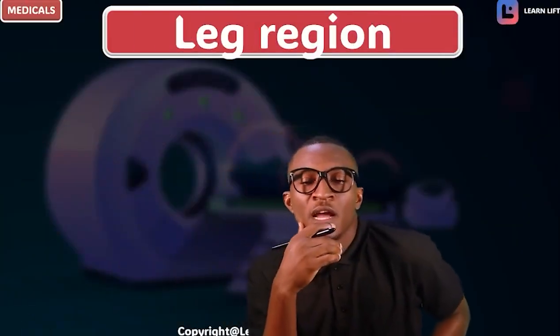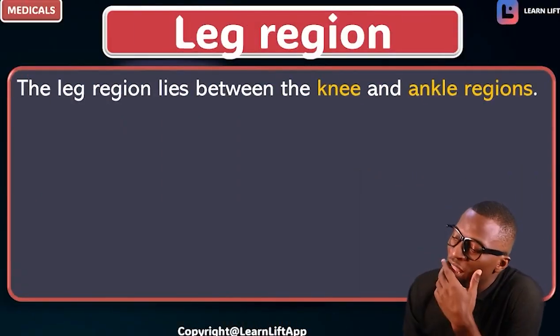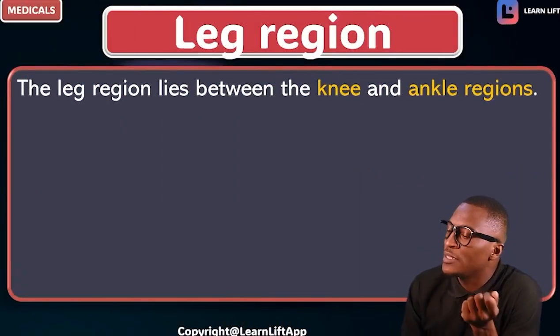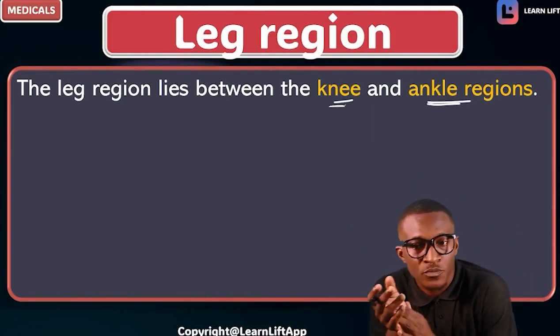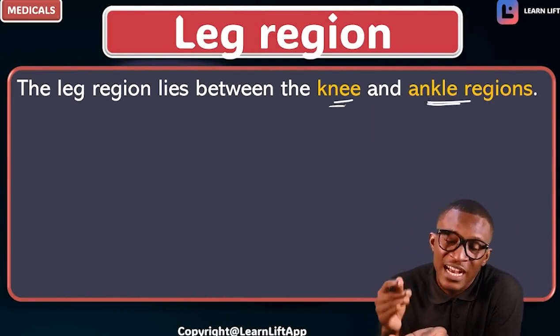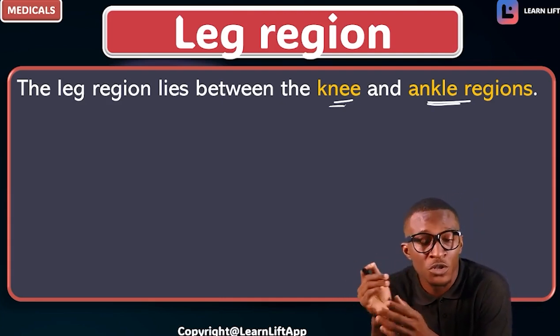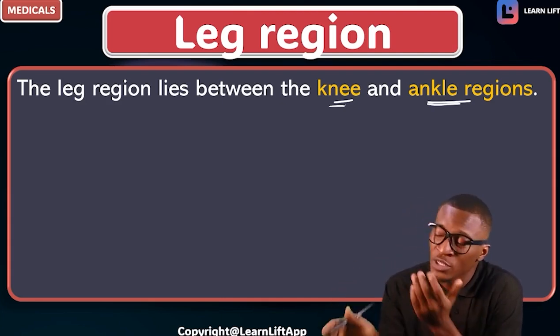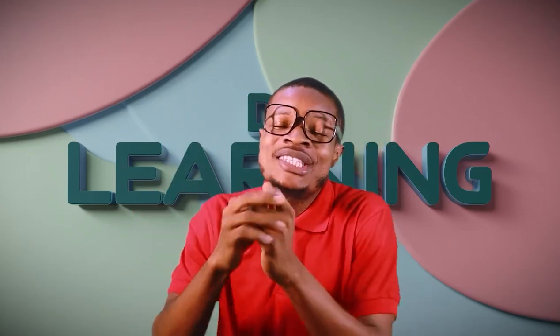Let's now talk about the leg region. Take note that the leg lies between the knee and the ankle. The region between your knee joint and the ankle region is what we call your leg. Both of them are joints — the knee is a joint and the ankle is a joint.